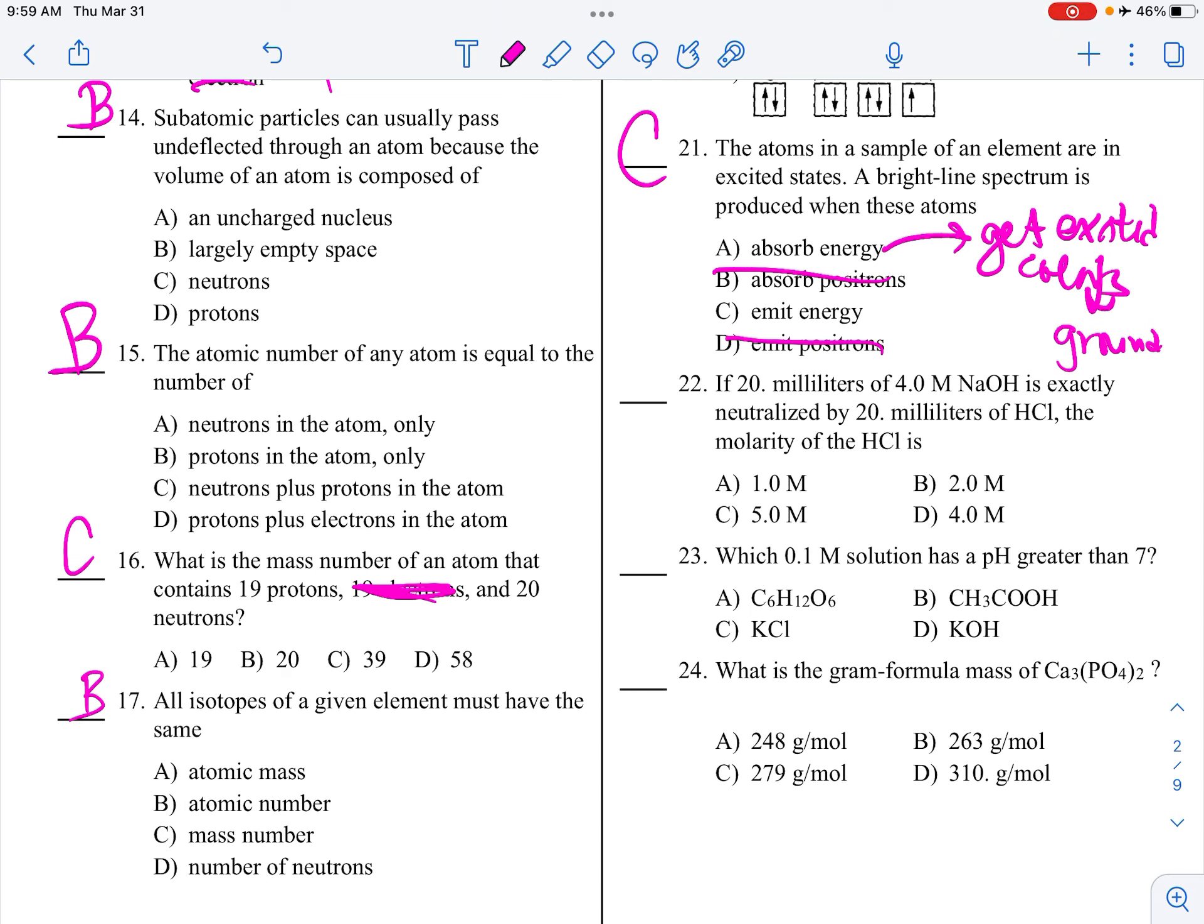If 20 milliliters of a 4 molar NaOH solution is exactly neutralized by 20 milliliters of HCl, what is the molarity? So, this is dilution. Molarity 1, volume 1, equals molarity 2. Oh, sorry. This is the base side. It doesn't matter. I guess I can do it this way. So 20 milliliters, looks like we have the same volume. Hmm, the same volume. So, if you have the same volume, you're going to have the same molarity. So, oh, D, not 4. You can do the math if you want.